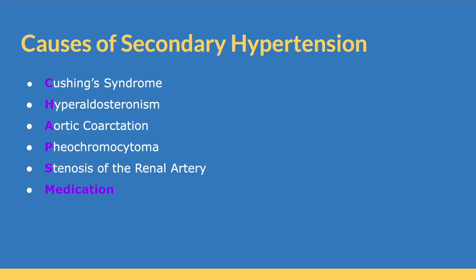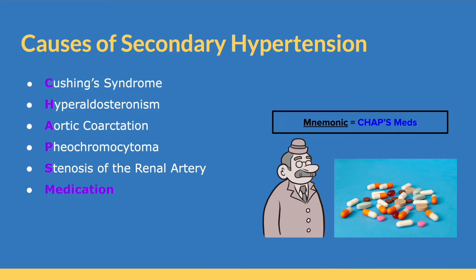An easy way to remember these causes of secondary hypertension is to take the first letter of the first five, and then the word medication, and use the mnemonic CHAPS meds. CHAPS being the first letter of the first five, and meds being medication. So just remember this CHAP on the left with his medications on the right. Now let's quickly talk about each cause of secondary hypertension individually.